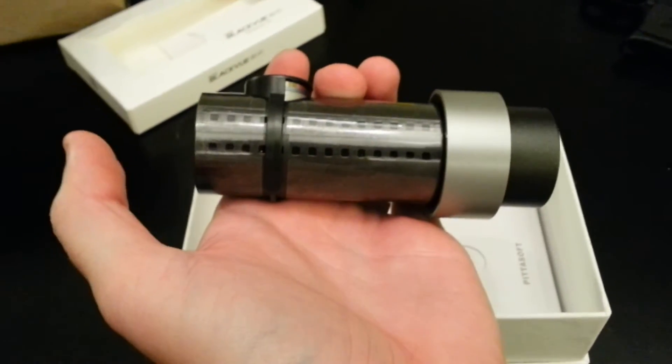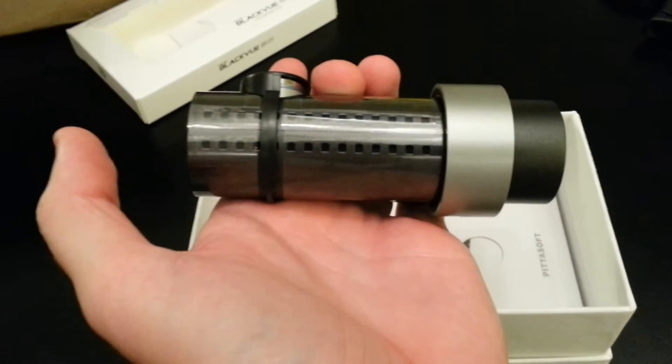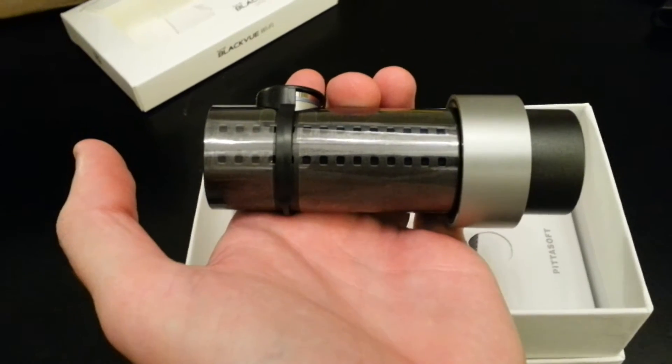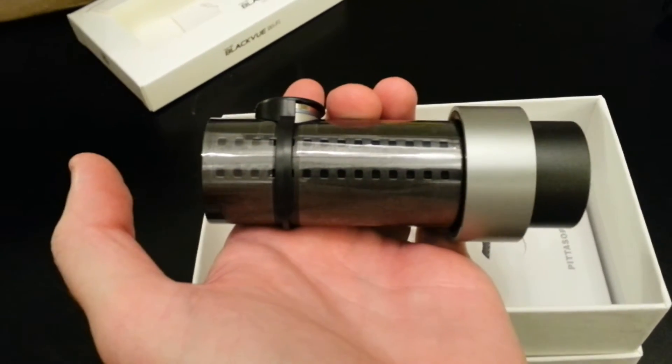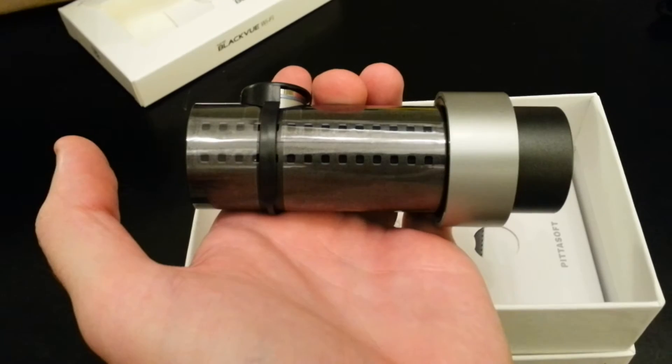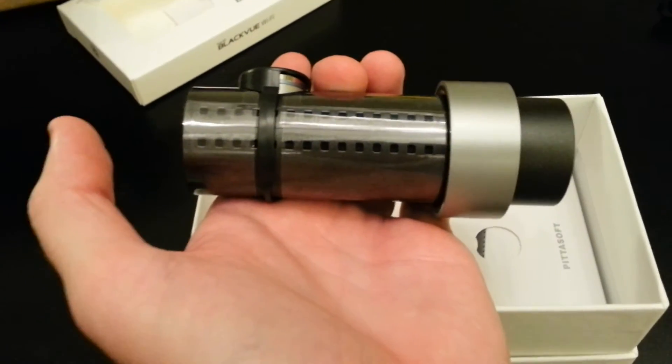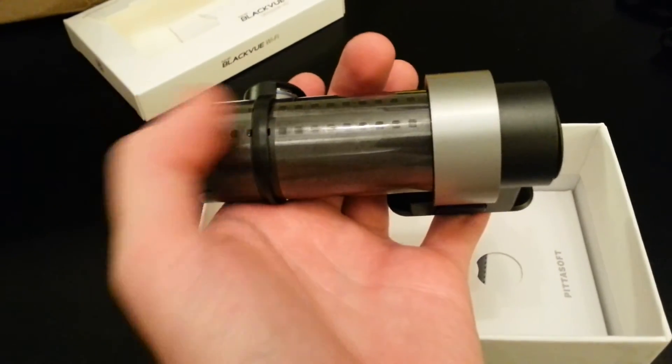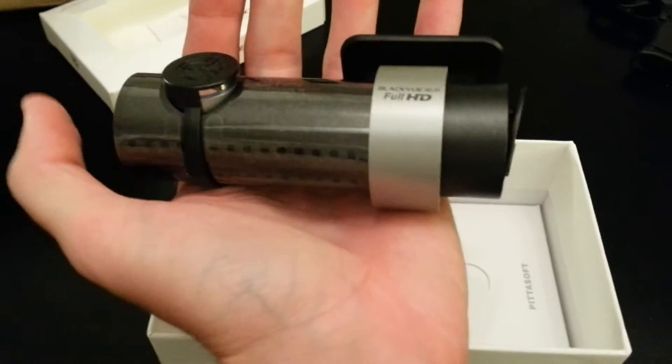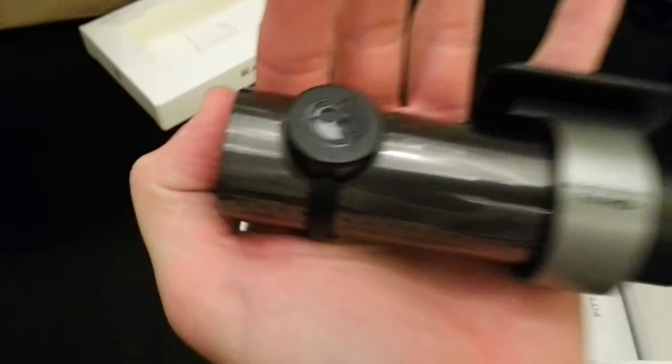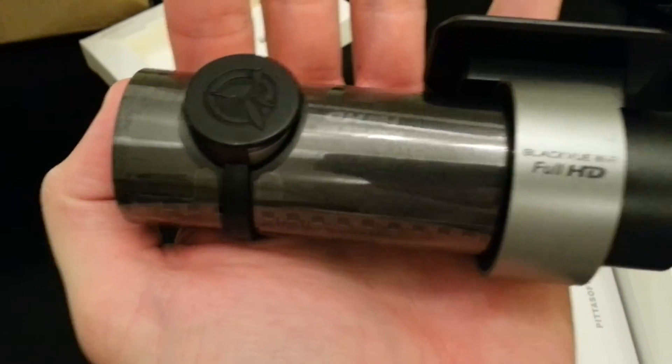Just to also show you something, this has vents now. My DR400, the first version, got really hot in the summertime, at least here in Florida. In Florida when it would get very hot in the car, especially in parking mode, I would get purple lines on the recordings. So now this is bigger. I'm assuming it's probably got heat sinks in it and I also see the vents here. This is wrapped in some nice plastic which I haven't taken off yet, so it keeps it from being scratched up which I like.